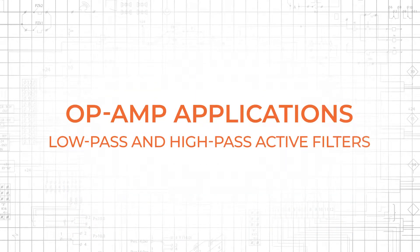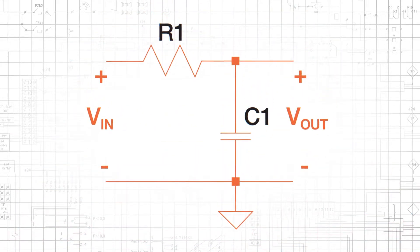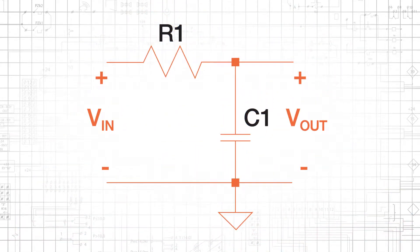In this video, we'll explore a particularly important application of op-amps, namely the design of high-performance filters that do not require inductors. First-order low-pass and high-pass filters require nothing more than resistors and capacitors. These passive filters are easy to design and analyze, but when system requirements cannot be met by a first-order filter, the designer must consider a second-order or other higher-order filter.